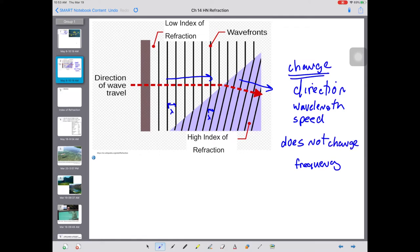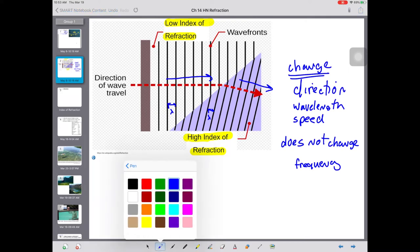That frequency of the light, if it changed, then frequency corresponds to color. Things would appear significantly different colors underwater, and they do not. The amount of bend is going to depend on the change in speed. A number we can use to talk about that change in speed is index of refraction. In this diagram, we have light going from a low index of refraction into a high index of refraction, and we see the amount of bend.